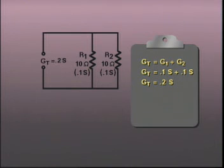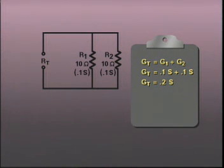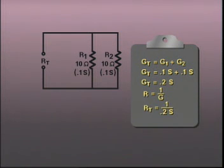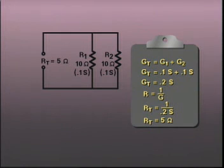In electronic circuits, we see the components as resistors, not conductances. So we need to convert conductance values to resistance values. Since resistance is the reciprocal of conductance, the total resistance value in this circuit equals the reciprocal of 0.2 siemens. Taking the reciprocal of 0.2 gives 5 ohms as the total resistance of the circuit.